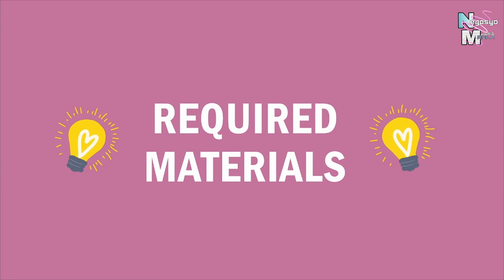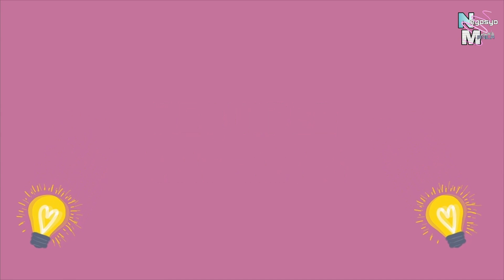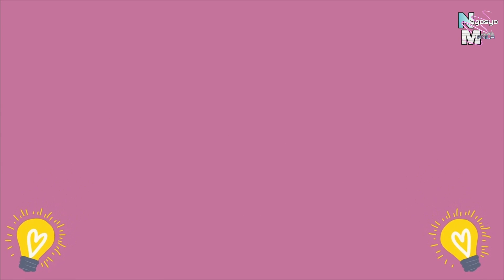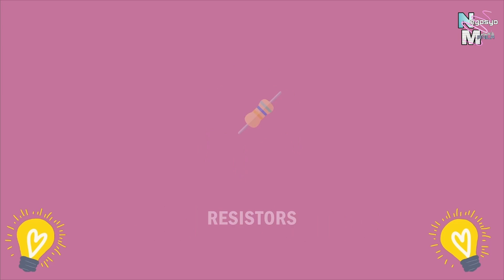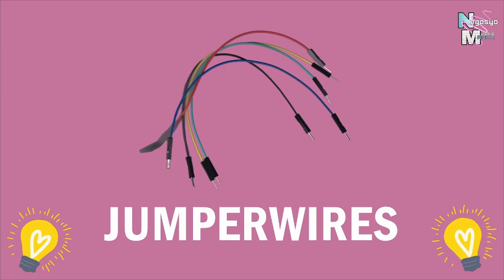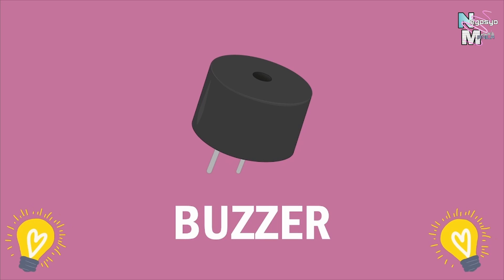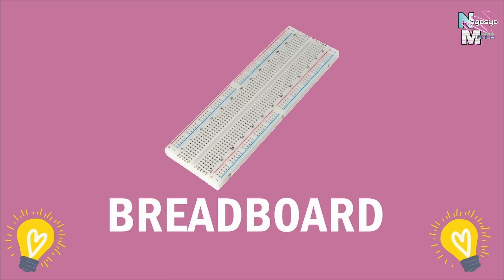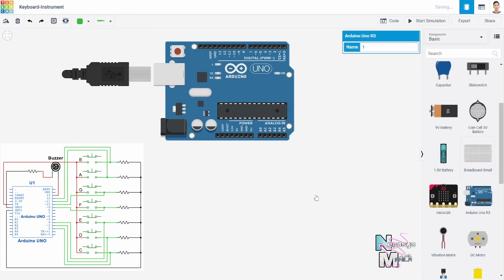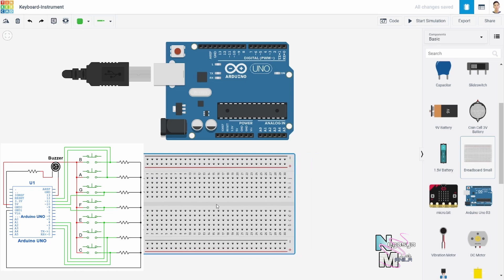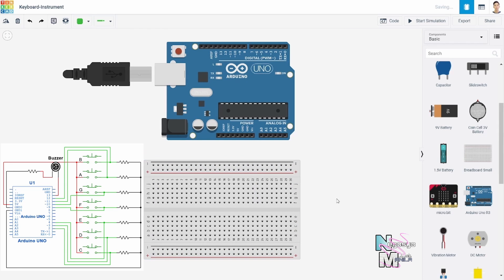To begin with, we shall be familiar with the electronic components that we will be using in the project. First, we need an Arduino Uno, seven push buttons, 220-ohm resistors, 11 jumper wires, a piezo buzzer, and a breadboard.